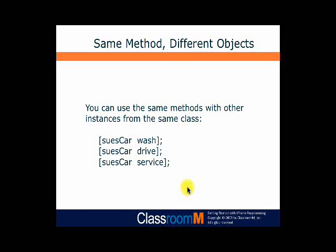One of the nice things about object-oriented programming is that once you write a set of methods for a class, those methods can be used for all different objects that come out of that class. Going back to our car class — I can wash my car, but Sue can also wash her car using the same method. So if a car from the factory is stored in a variable called Sue's car, I can send the wash, drive, and service messages to Sue's car. You get to reuse these methods for all objects created from that class, which is one of the important attributes of object-oriented programming.